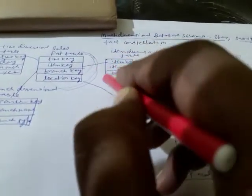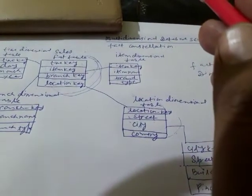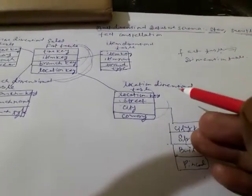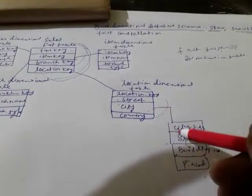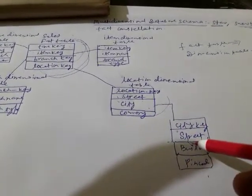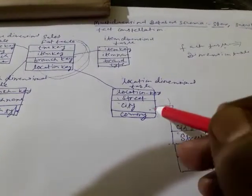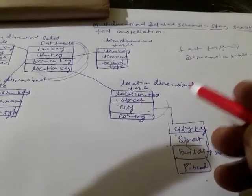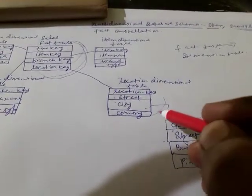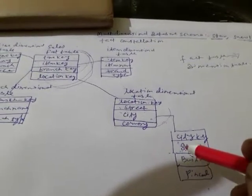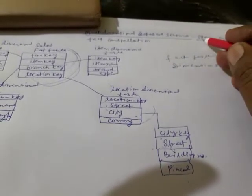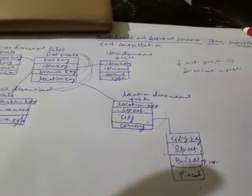What is different between the star and the snowflake? In the star schema, the fact table is there and all dimension tables are directly connected to the fact table. In the snowflake schema, a dimension table has one more dimension table connected to it — normalization happens there. When you want more detail about an attribute, you go for the snowflake; otherwise, the star schema is sufficient.